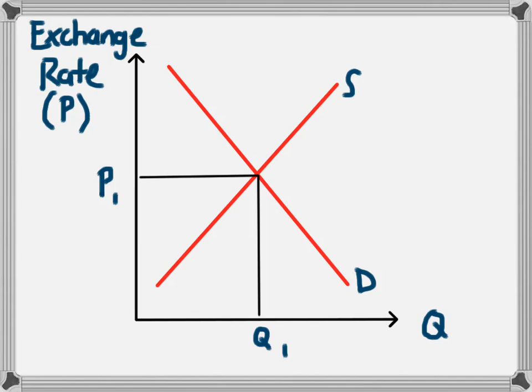So we have a downward sloping demand curve for currency, just like we do for anything else. And at the same time, when the price is high, people will want to supply more of that product, and when the price is low, people will be less inclined to supply that product. And so we have an upward sloping supply curve for a currency.